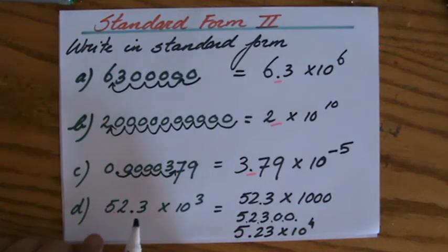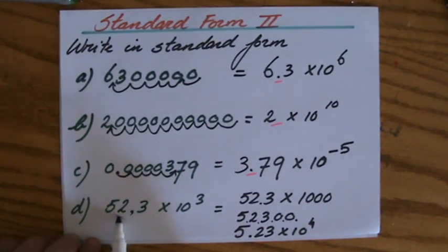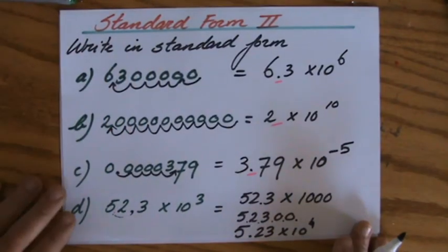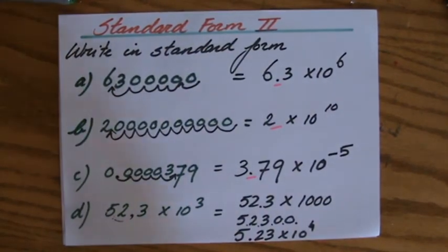It's a little bit small there in the corner, I hope you can read that. Perhaps you saw that I could do that directly, so 5.23 times ten to the power four, because I move it one more place so the three goes to four.